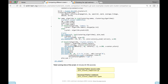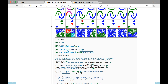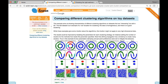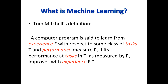Feel free to explore the site and read about any of these examples or algorithms that you are interested in. Now let's go back and define what machine learning is. Here is Tom Mitchell's definition: a computer program is said to learn from experience E with respect to some class of tasks T and performance measure P, if its performance at tasks in T as measured by P improves with experience. So machine learning is all about learning from experience and applying what it has learned.